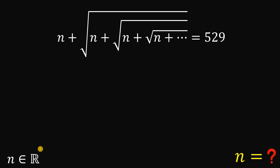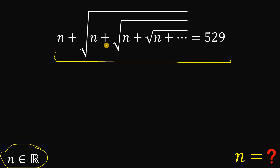Our goal here is to solve for the real value of n that satisfies this equation: n plus square root of n plus square root of n plus square root of n until infinity equals 529. So let's work with this equation.